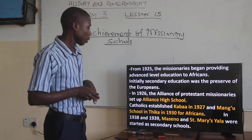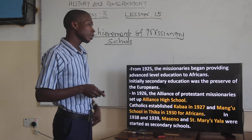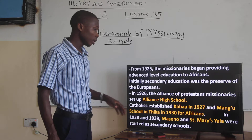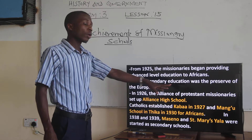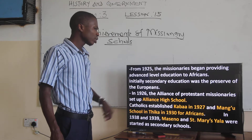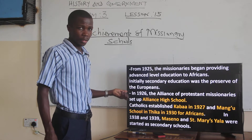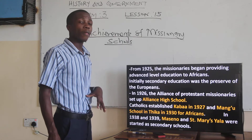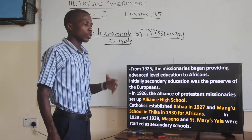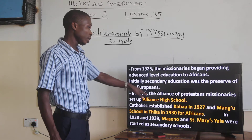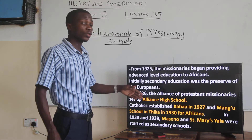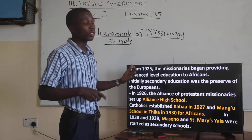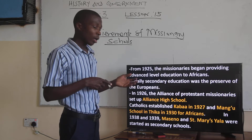The Alliance High School was established under the Alliance of Protestants and Missionaries. The Catholics also established Kabaa in 1927 and Manu School in Pika in 1930 for Africans. These schools were constructed for Africans by the missionaries for the first time, as they realized Africans were not having the opportunity to continue with high school.